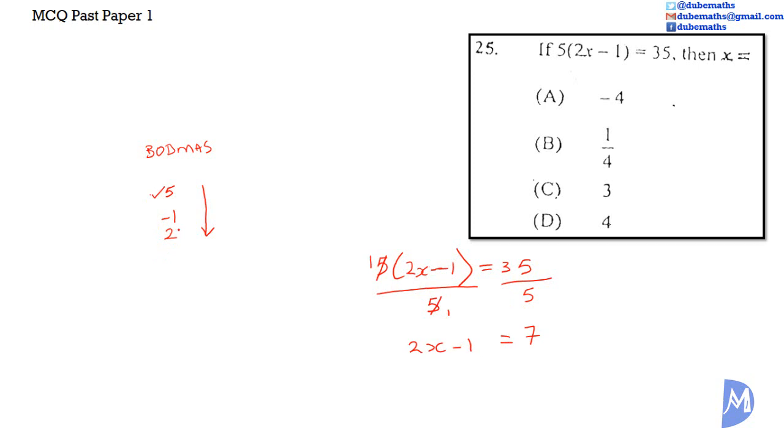Now we want to remove negative 1. To remove the negative 1, we add 1 to both sides. So we add 1, and we add 1. A negative 1 added to 1 gives 0, so we remain with 2x. 7 plus 1 is equal to 8.